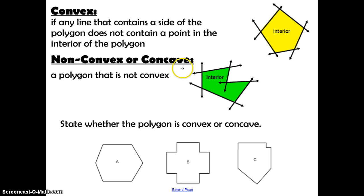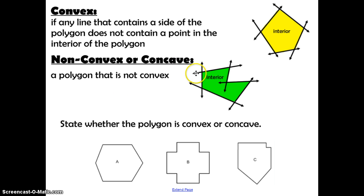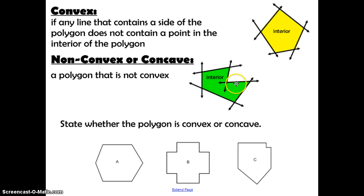A non-convex or concave polygon is just a polygon that is not convex. When we extend all the sides of this polygon, you can see that this side and this side intersect into the interior of the polygon. So that's called concave.